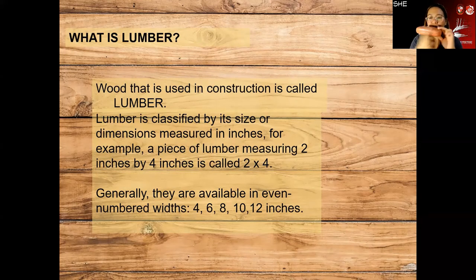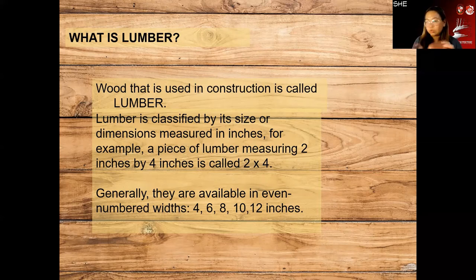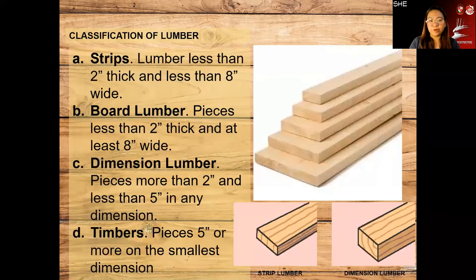The length of lumber is generally available in even numbers. Usually 2x4, 2x6, 2x8, 2x12. That's where the expression 'paloyin kita ng 2 por 2' comes from — 2 by 2 refers to the section of the lumber. Lumber has different classifications.